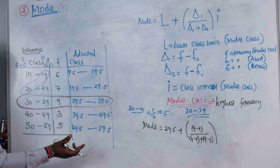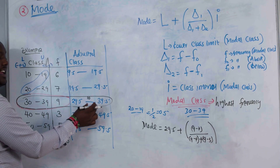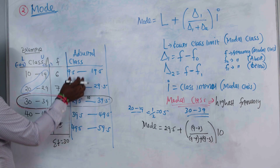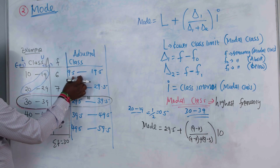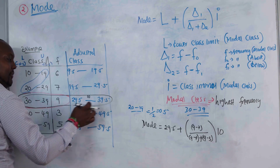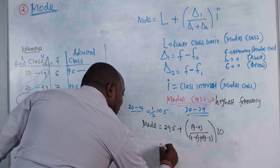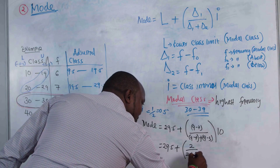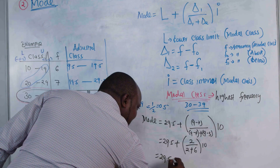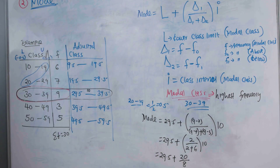The class interval I is 10 (from 29.5 to 39.5). So the formula gives: Mode = 29.5 + (2 / (2 + 6)) × 10 = 29.5 + (2 / 8) × 10 = 29.5 + 20/8. The numerator is 20 and the denominator is 8.